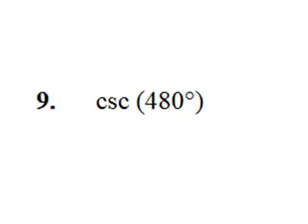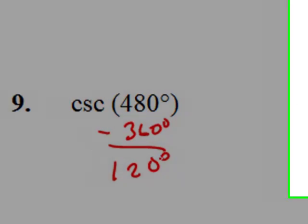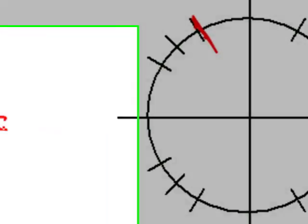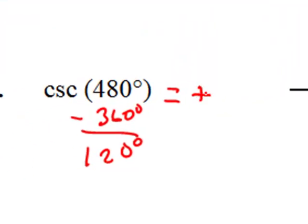480 degrees. Now, this is more than 360, so I'm going to need to subtract 360 degrees from that. And we get 120 degrees, which is right here in quadrant 2. Cosecant in quadrant 2, just like sine, is positive. So I'll write a plus sign there.